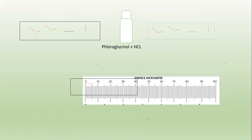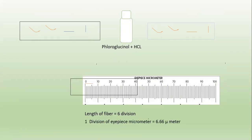The first line of the eyepiece micrometer is to be matched with the starting of the fiber. Then we measure where the end of the fiber falls. The end of the fiber is at six divisions. So the total length of the fiber is equal to six divisions. As one division of the eyepiece micrometer is equal to 6.66 micrometers, six divisions is equal to 6 multiplied by 6.66 micrometers, which equals 39.96 micrometers. So the length of the fiber is 39.96 micrometers.